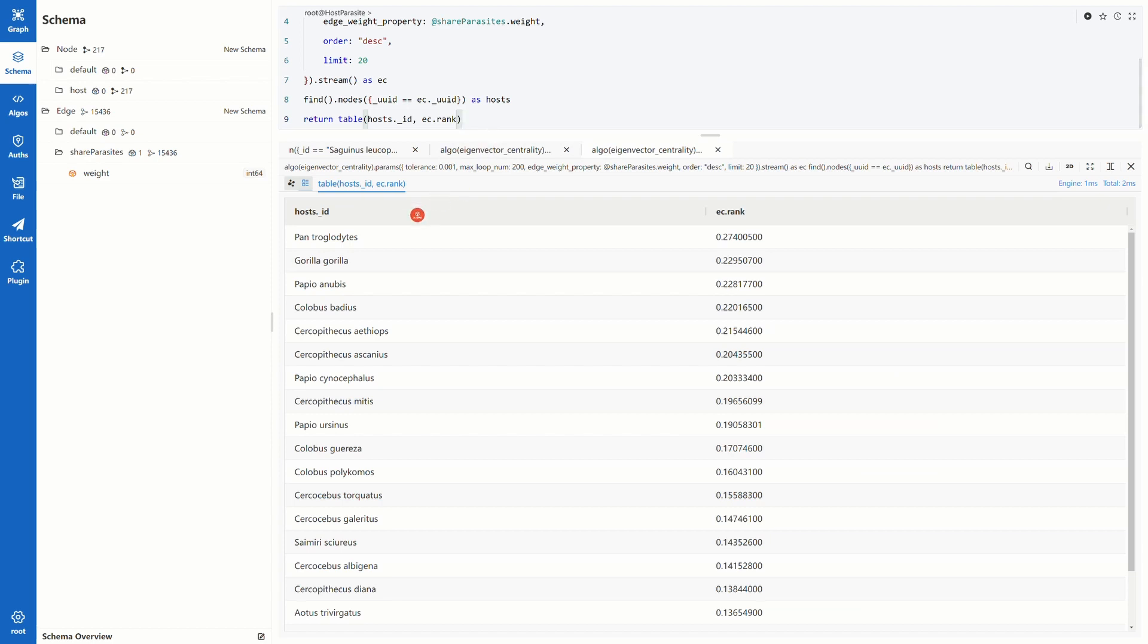And we run it. We can see Pan troglodytes is at the top, followed by Gorilla gorilla, Papio anubis and so on. These animals can be considered crucial in the parasite transmission that deserves special precautions.